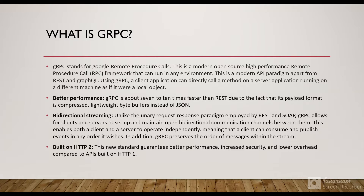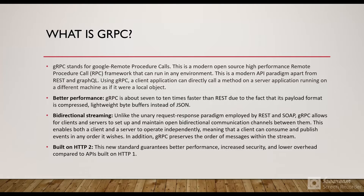With gRPC, a client application can directly call a method on the server application running on a different machine as if it was a local object. So a client application could directly make a call to the server application, and some logic can be performed on the server side when the client calls that specific procedure on the server. This invocation is called a remote procedure call. It is based on HTTP2, which provides bi-directional communication between the client and server.